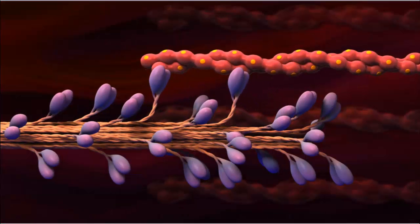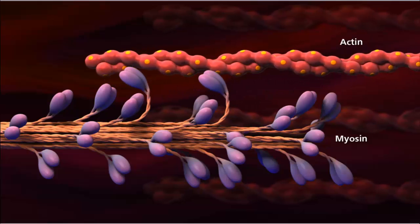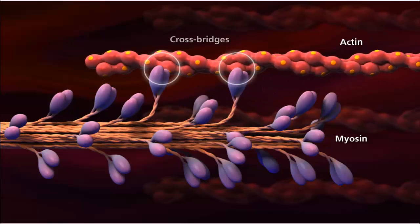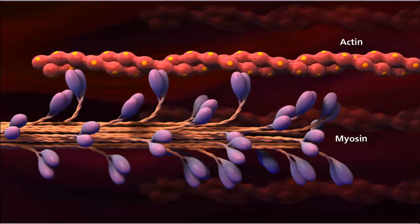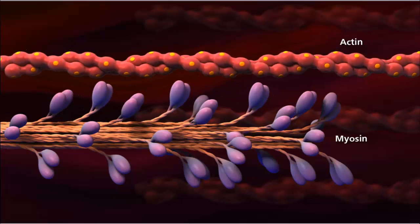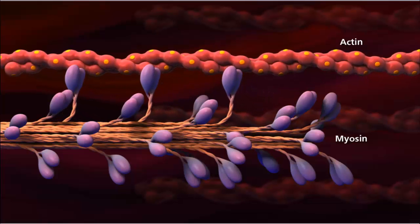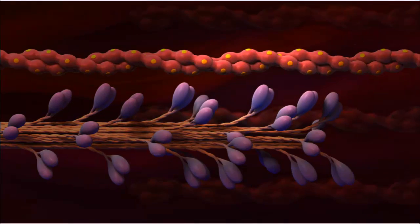Although the action between the filaments is described as sliding, the myosin filament actually pulls the actin along its length. The cross-bridges of the myosin filaments attach to the actin filaments and exert force on them to move. This action is known as the sliding filament mechanism of muscle contraction. In this model, the sarcomeres shorten without the thick or thin filaments changing in length.